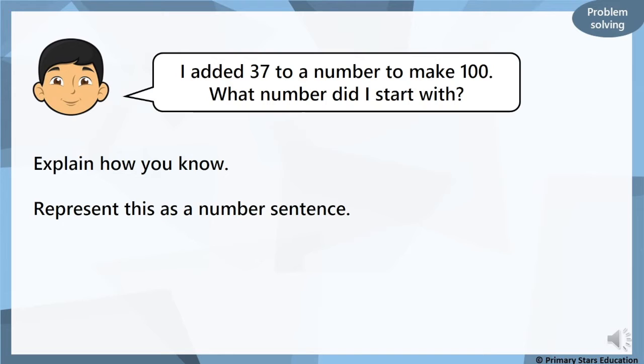We've got another one here. I added 37 to a number to make 100. What number did I start with? Explain how you know and represent this as a number sentence. You can pause it now and explain it to a grown up or you can write it on your whiteboard. Have a go at writing this as a number sentence. Okay. Che started with the number 63. And we know this because 63 add 37 is 100.